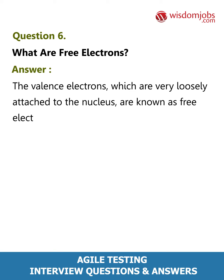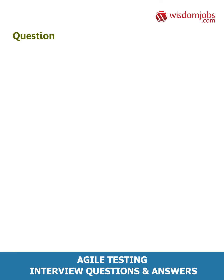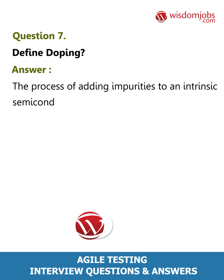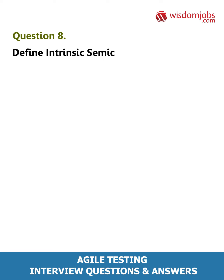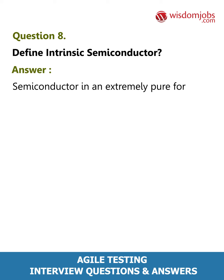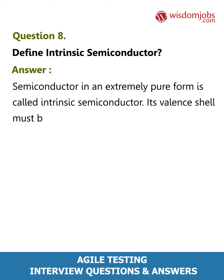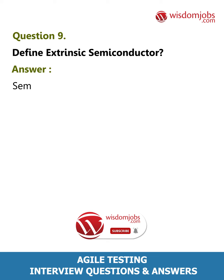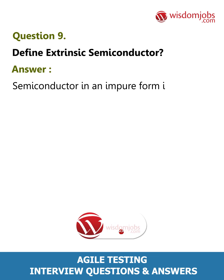Question 7: Define doping. Answer: The process of adding impurities to an intrinsic semiconductor is called doping. Question 8: Define intrinsic semiconductor. Answer: A semiconductor in an extremely pure form is called an intrinsic semiconductor. Its valence shell must be tetravalent in nature.